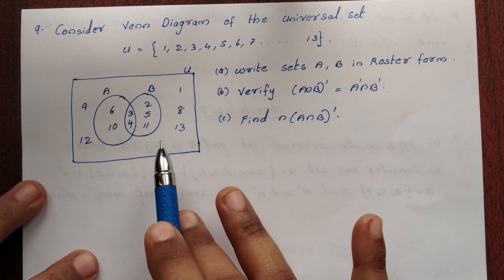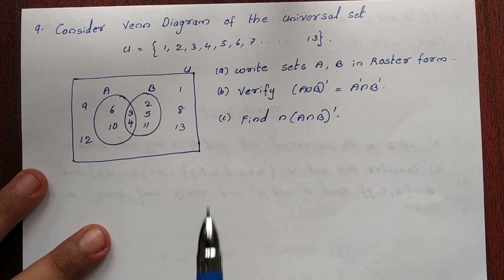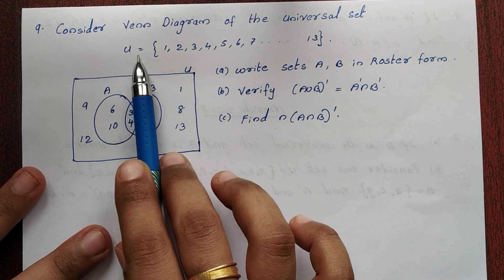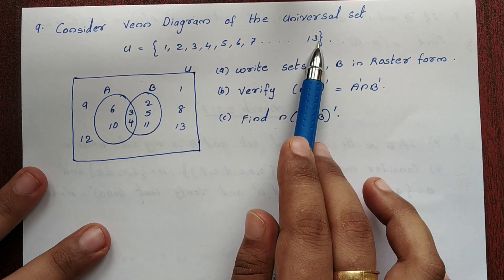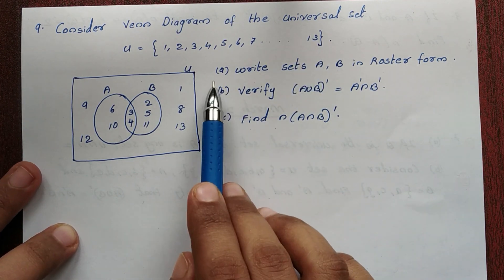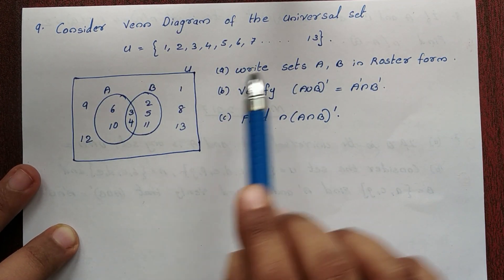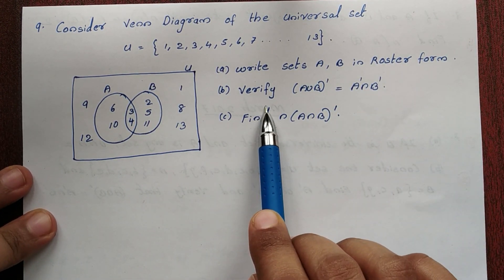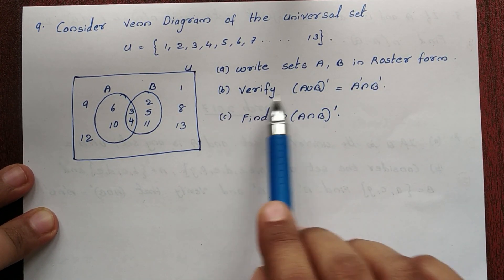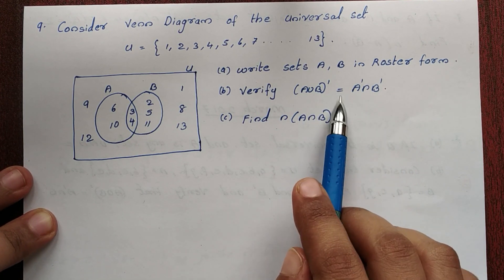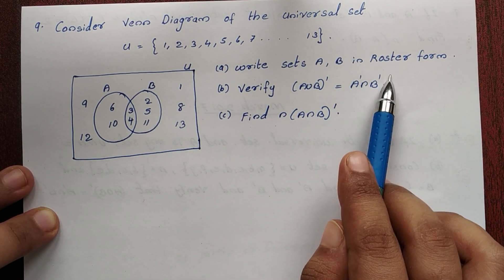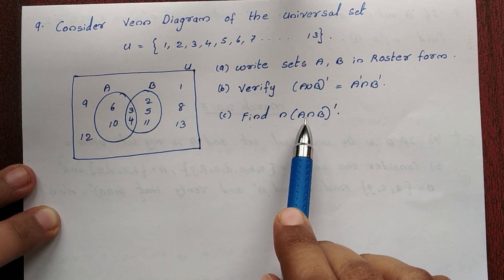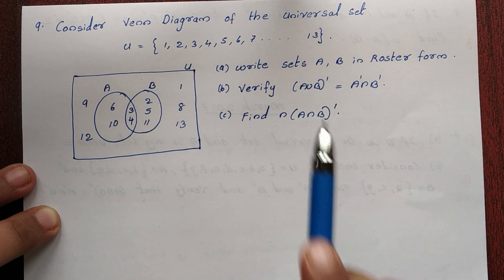Next question — this is the 9th question. Consider the Venn diagram of the universe set {1, 2, 3, ... up to 13}. First question: write sets A and B in roster form and verify. Second question: verify that (A ∪ B)' = A' ∩ B'. Third question: find the number of elements in (A ∩ B)'.